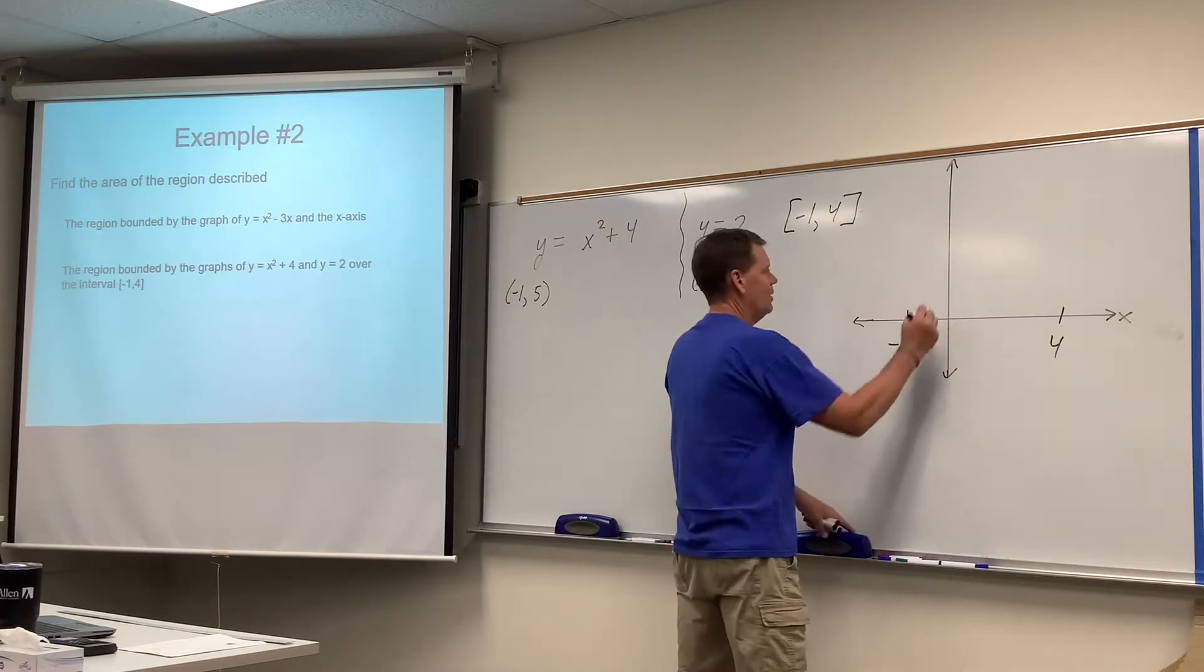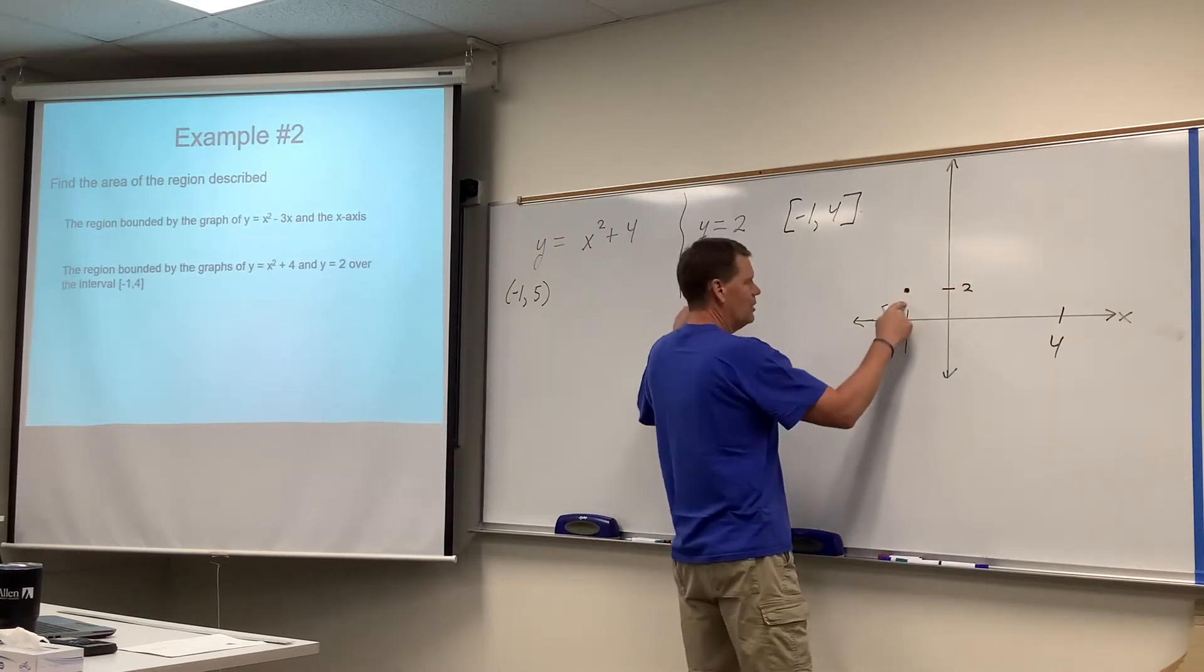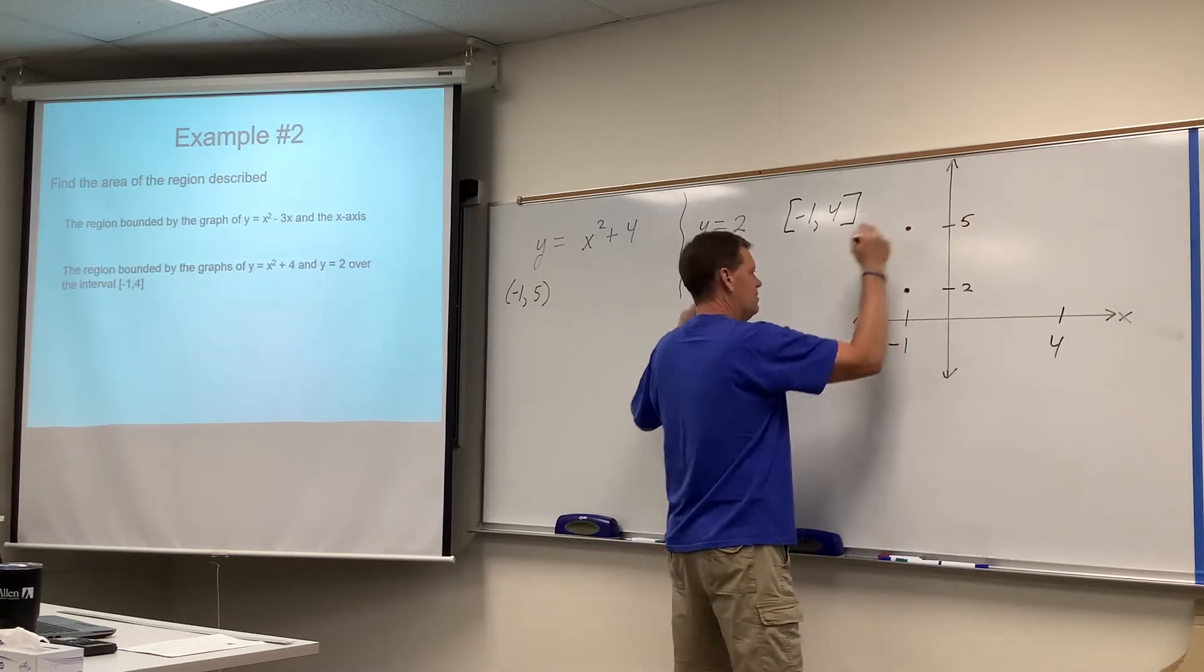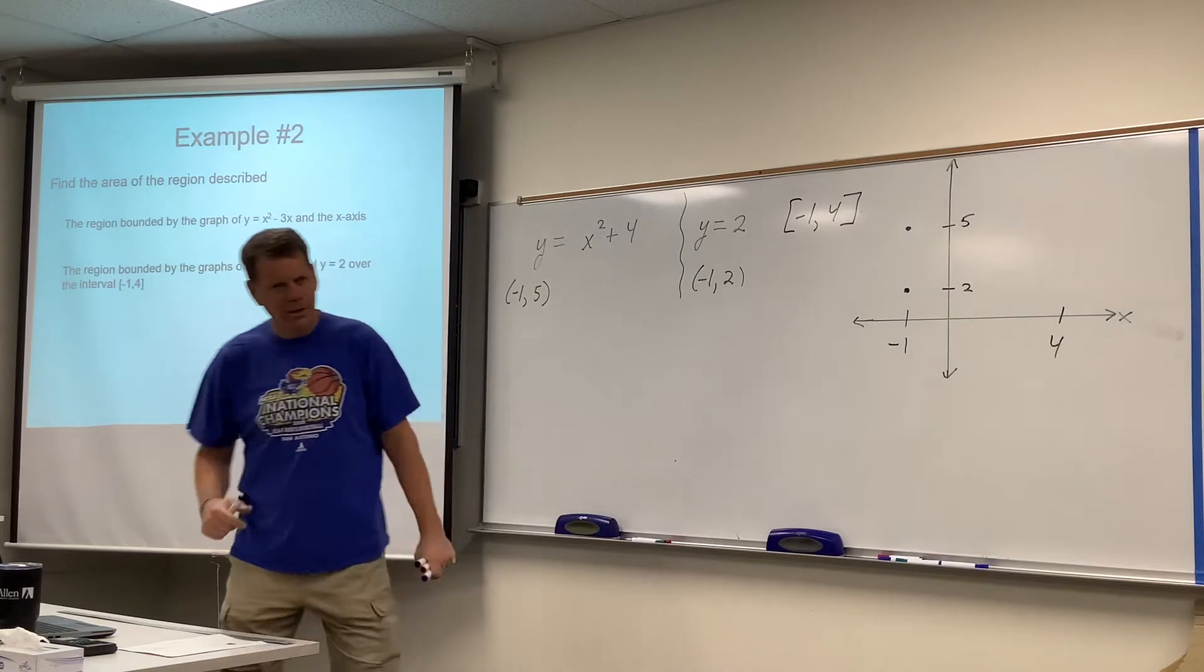Notice they're not equal. We already established with simple algebra that they're never going to be equal. One curve is always above the other. Always. They never cross, and this confirms that.